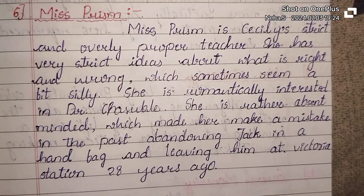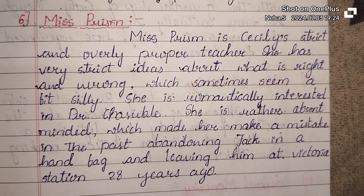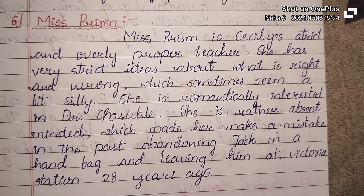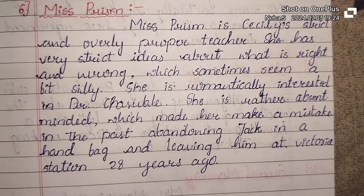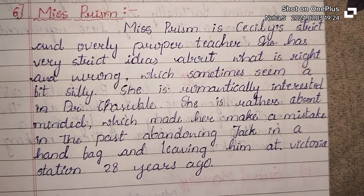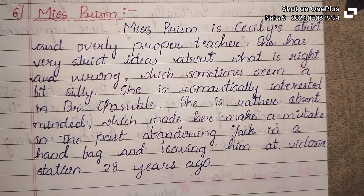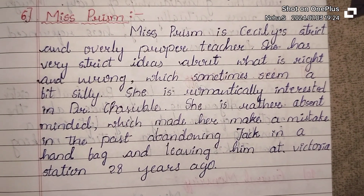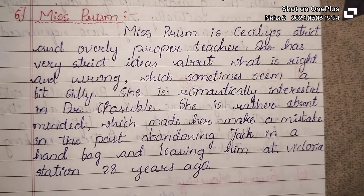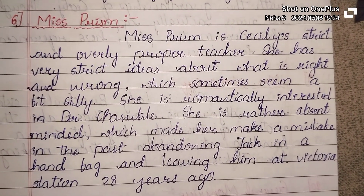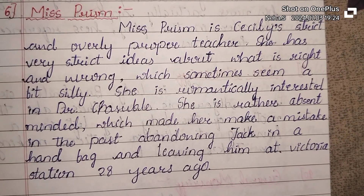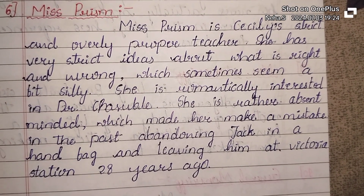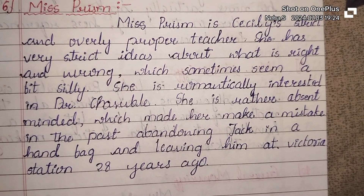Miss Prism is also a major character. Miss Prism is Cicely's strict and overly proper teacher and caretaker. She has very strict ideas about what is right and wrong, which sometimes seem a bit silly. She is romantically interested in Dr. Chausseval. She is rather absent-minded, which made her make a mistake in the past — abandoning Jack in a handbag and leaving him at Victoria station about 28 years ago.